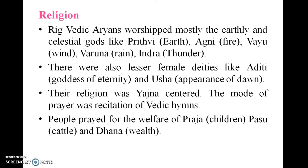The Rigvedic Aryans worshipped mostly earth and celestial gods like Prithvi (earth), Agni (fire), Dyaus (sky), Bhumi, Vayu (wind), Varuna (rain), and Indra (thunder). There were also lesser female deities like Aditi, goddess of eternity, and Usha, the goddess of dawn. Their religion was Yajna-centered. The mode of prayer was recitation of Vedic hymns. People prayed for the welfare of Praja (children), Pasu (cattle), and Dana (wealth).